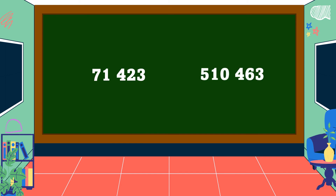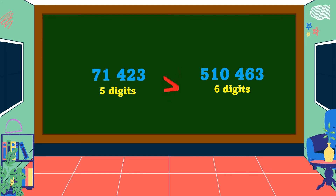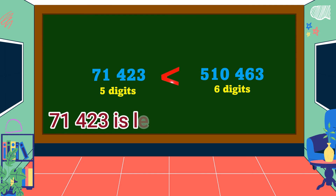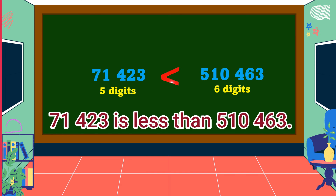Next example: count the digits. The first number has five digits; the second number has six digits. When the number of digits is different, the number with more digits is greater. So the relation symbol is less than. To avoid confusing less than and greater than: remember that the mouth of the symbol always points to the bigger number. If the bigger number is on the right, use less than. If the bigger number is on the left, use greater than. Therefore, 71,423 is less than 510,463.